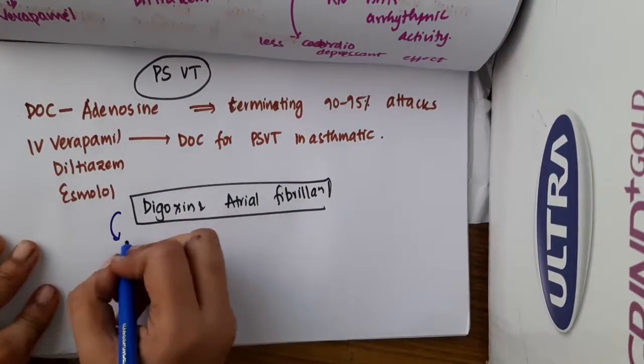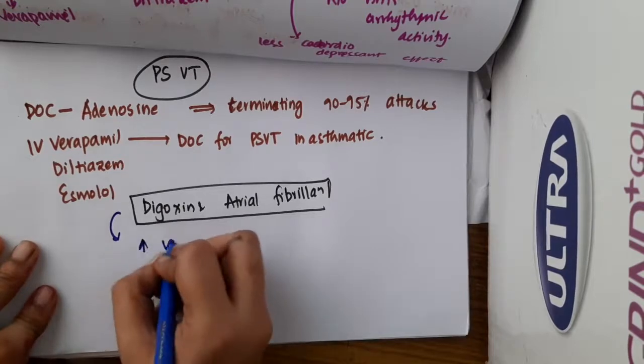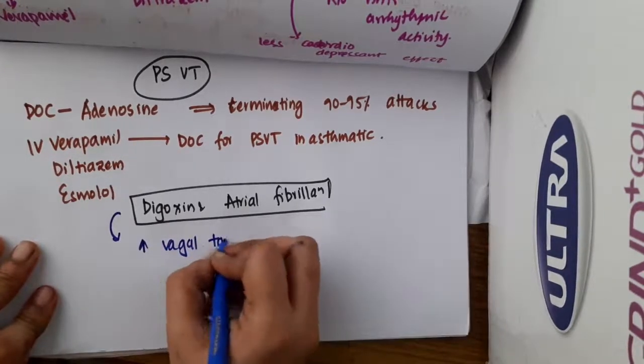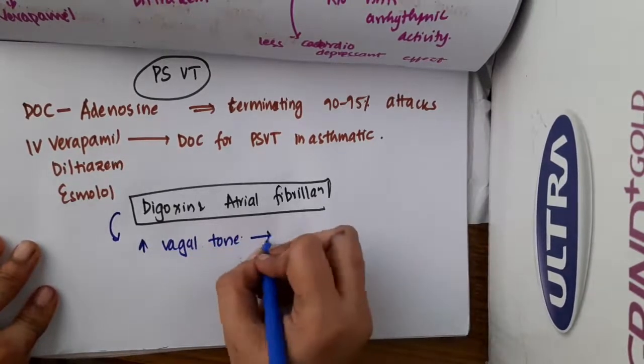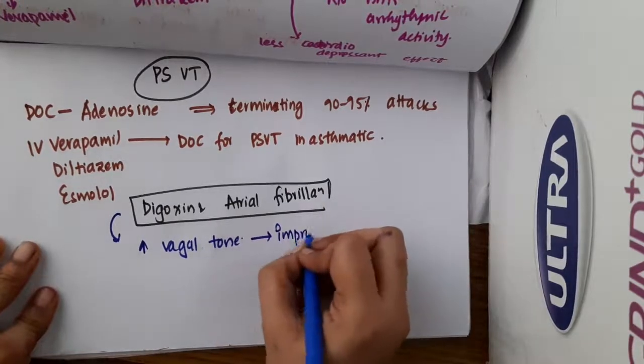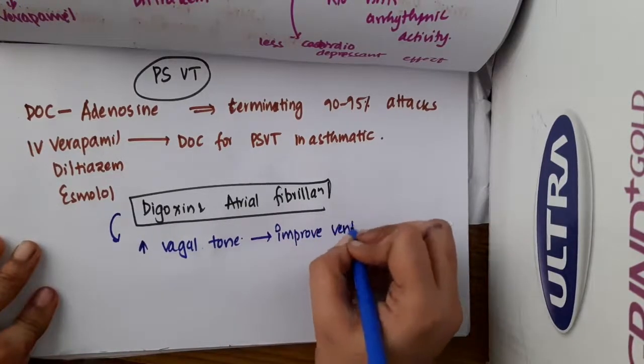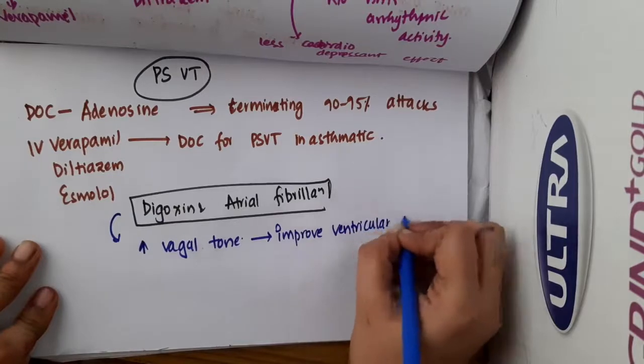Digoxin increases vagal tone, and this increased vagal tone improves the ventricular rate control in atrial fibrillation.